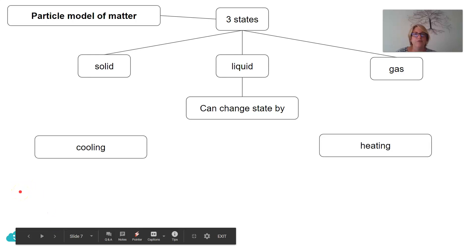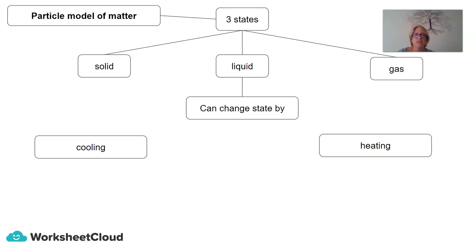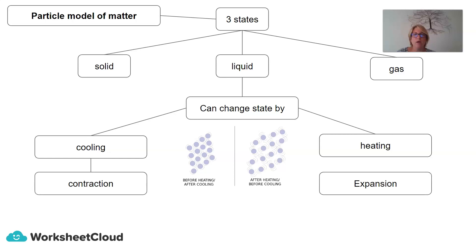And if we continue looking at our three states of matter, and we focus on a liquid, we can change the state of a liquid by heating or by cooling. And when we cool a liquid, it contracts, and when we heat a liquid, it expands. And you can see how when we have a look at heating and cooling, it links up with the particle model of matter. So, this change of state also applies to solids and gases.